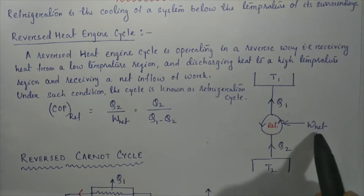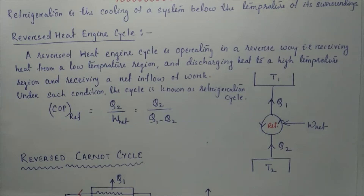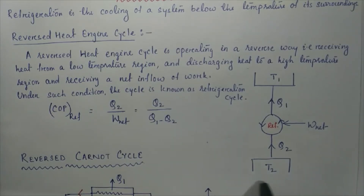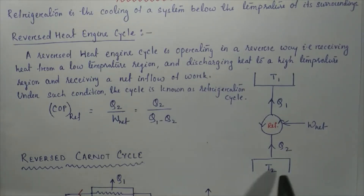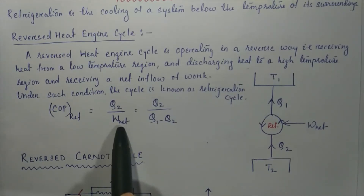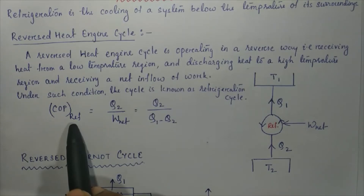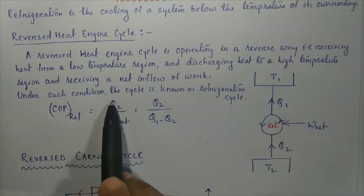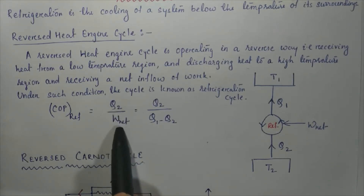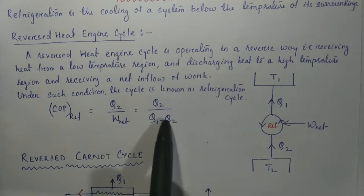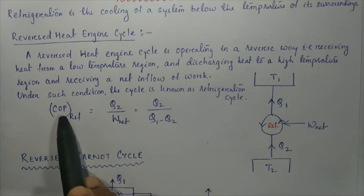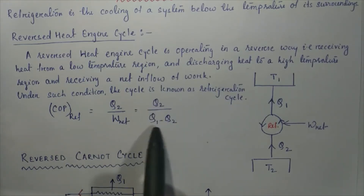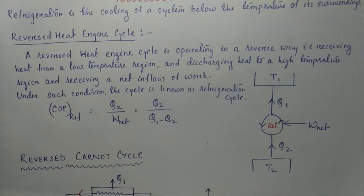If W_net is not supplied to the system, Q2 from the lower energy reservoir will not flow to the surroundings. So W_net is considered the input of the whole system, and Q2 is the desired effect — the amount of energy removed from the reservoir. Therefore, the COP of the refrigerator equals Q2 divided by W_net, where W_net equals Q1 minus Q2. So COP equals Q2 divided by (Q1 minus Q2).